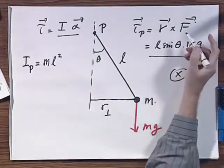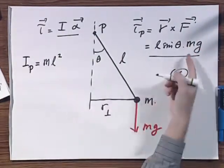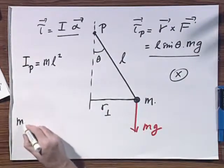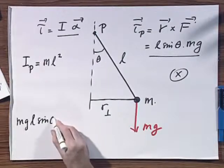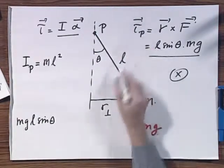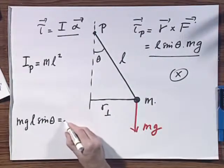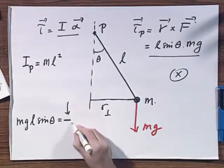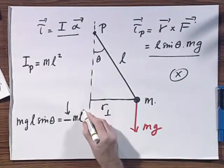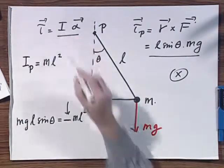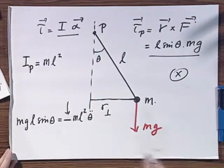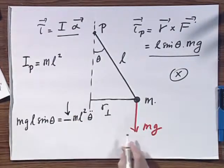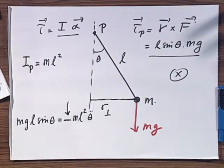I therefore have to introduce a minus sign. And so I get MgL sin θ which is the magnitude of the torque equals minus ML² which is the moment of inertia about that point P times θ double dot. This minus sign is crucial. It gives it the restoring characteristics.